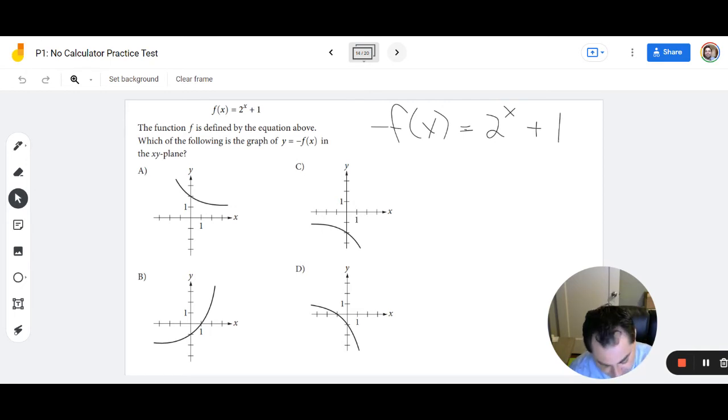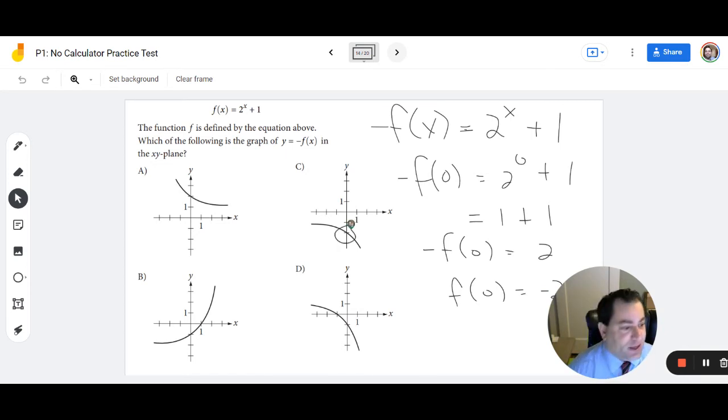So negative f of 0 equals 2 to the 0 plus 1. This is going to be 1 plus 1. Negative f of 0 is equal to 2. So f of 0 is going to be equal to negative 2. Well, that's good news for us because there's only one that has a y-intercept of negative 2 and that is C.